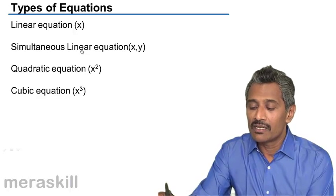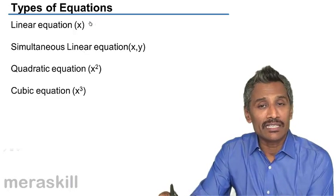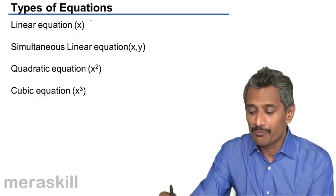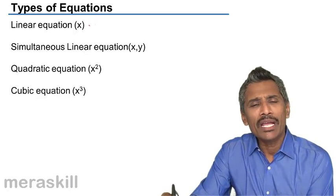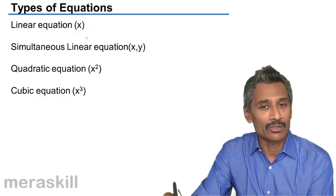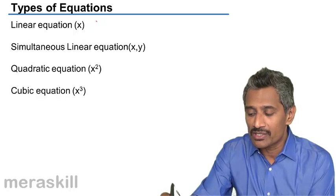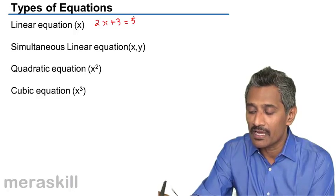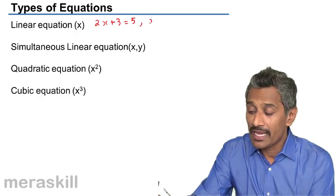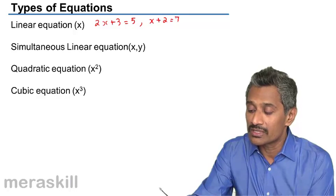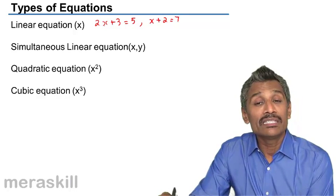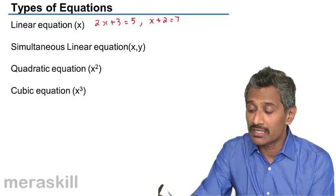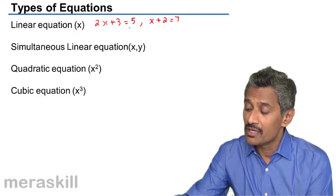Starting with linear equations — why do we call these linear equations? An equation like 2x plus 3 is equal to 5, or x plus 2 is equal to 7, these are all called linear equations because they are straight lines.